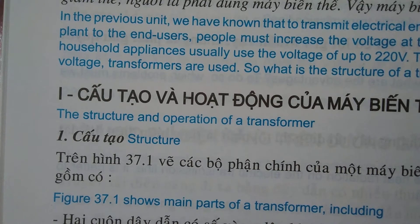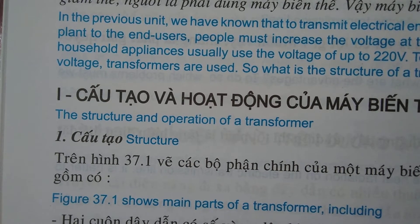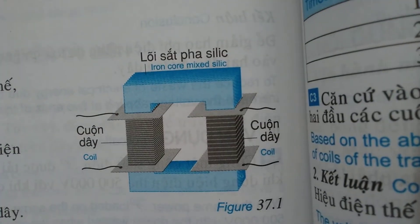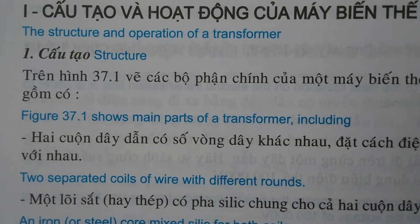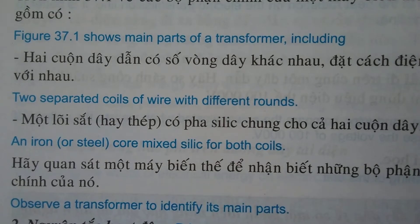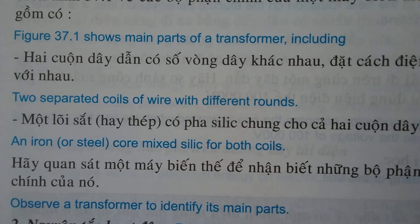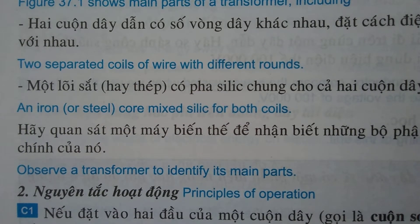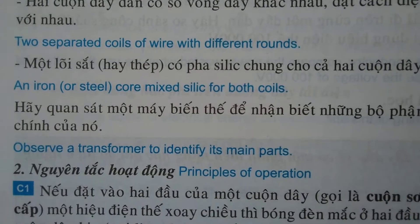The structure and operation of a transformer. Figure 37.1 shows the main parts of a transformer, including two separated coils of wire with different numbers of turns and an iron or steel core containing silicon, shared by both coils. Observe a transformer to identify its main parts.